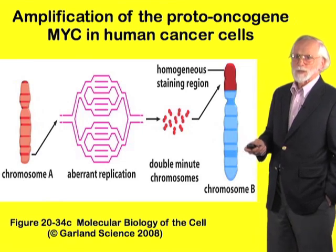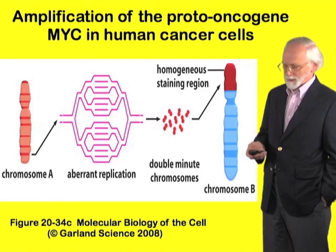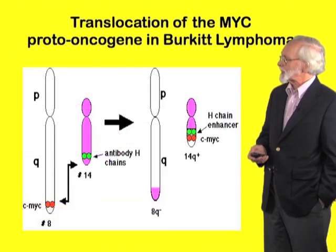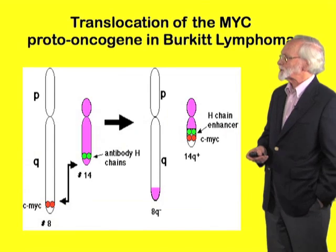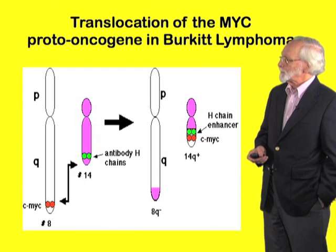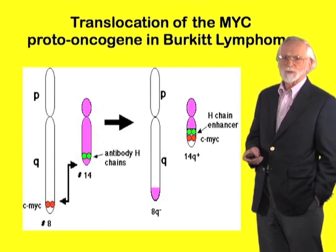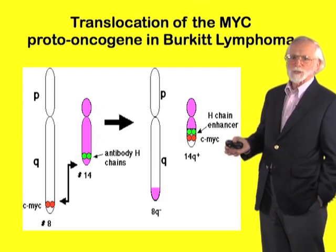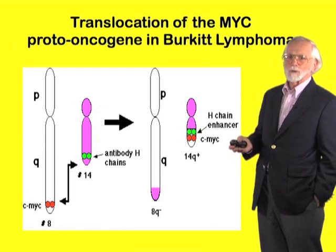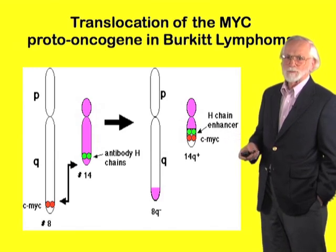The consequence is gross overproduction of the gene product. The second abnormality involved translocation of the sort first described for the Philadelphia chromosome. Translocations of the MYC gene were the first to be seen, and these translocations alter the control of the expression of MYC, again creating a gross overproduction of the gene product.